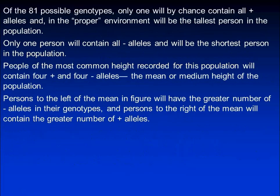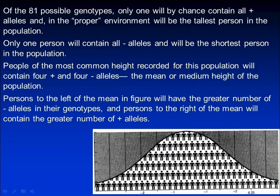Of the 81 possible genotypes, only one will by chance contain all plus alleles and, in the proper environment, will be the tallest person in the population. By the same reasoning, only one person will contain all minus alleles and will be the shortest person in the population. People of the most common height will contain four plus and four minus alleles — the mean height of the population, shown here in the middle.